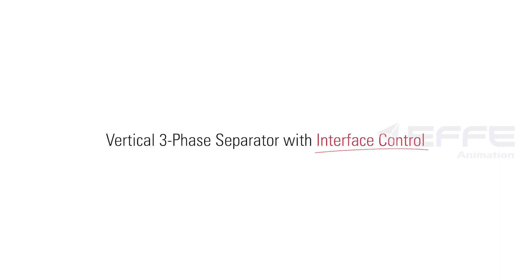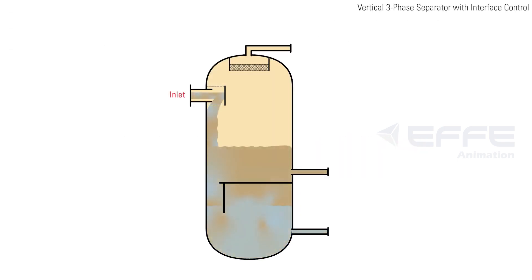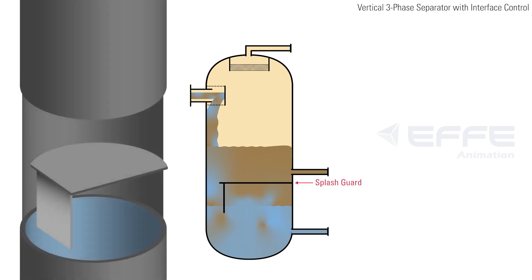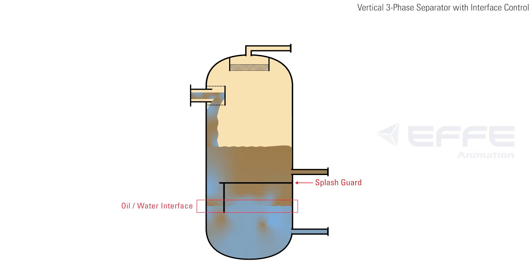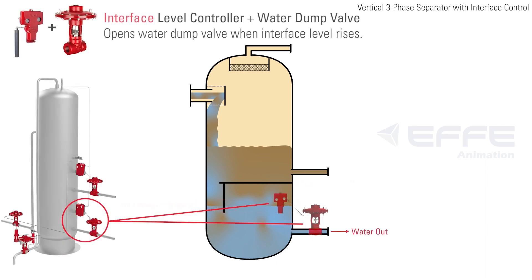In a vertical three-phase separator with interface control, the emulsion enters the vessel and immediately hits the inlet diverter plate, separating the bulk of the gas upon entry. The inlet diverter also helps control the emulsion flowing into the vessel by directing it down along the sidewall, minimizing disturbances to the fluid lower in the vessel. The emulsion encounters a splash guard to further minimize agitation. This baffle is open and allows the emulsion to flow downward while protecting direct interaction with the interface level controller to prevent a false reading of the fluid level.